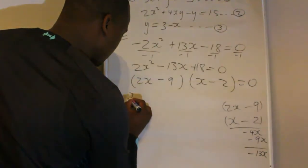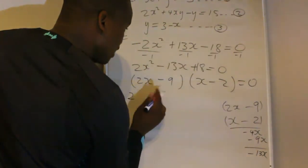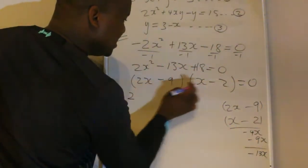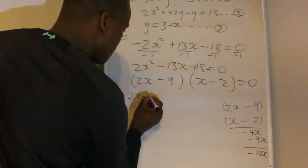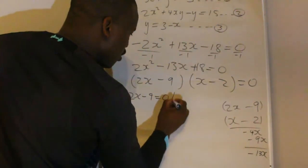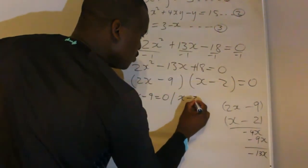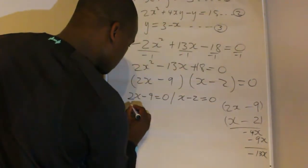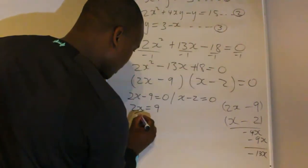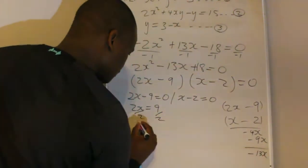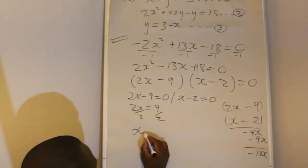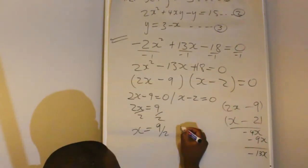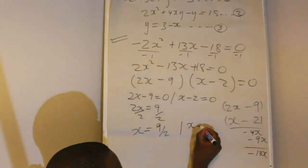If you don't know how to factorize, you can use the quadratic formula. For one of the factors to equal zero: 2x minus 9 equals 0, giving x equals 9 over 2; or x minus 2 equals 0, giving x equals 2.